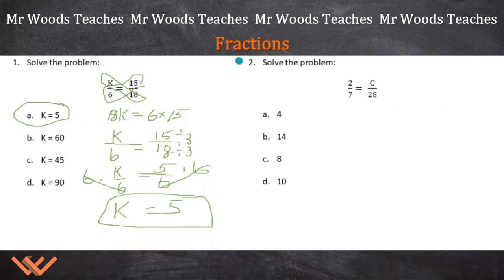Let's look at number 2. It says solve the problem: 2 sevenths equals c over 28. I can multiply each side by 7. So 7 times that and 7 times this gives me 2 equals c over 4. Then I multiply each side by 4. This crosses out, so 4 times 2 equals 8, which equals c.